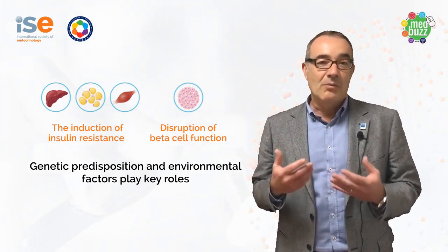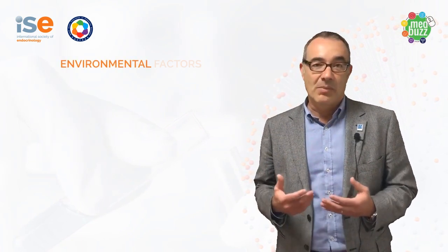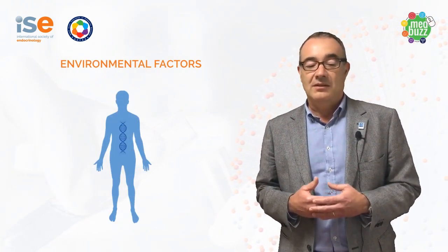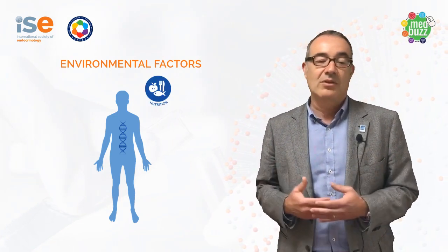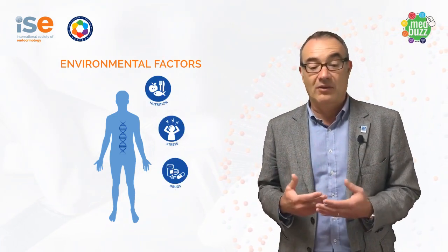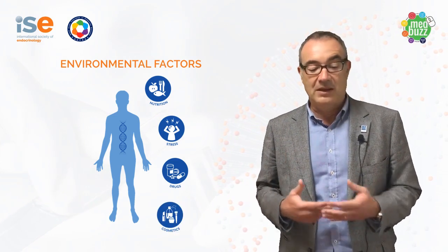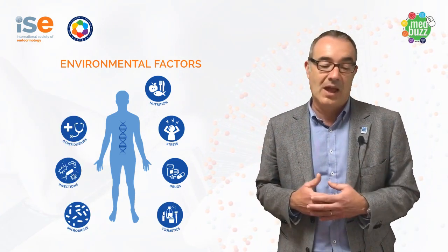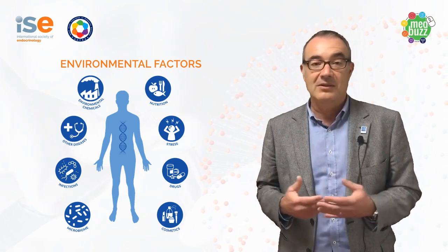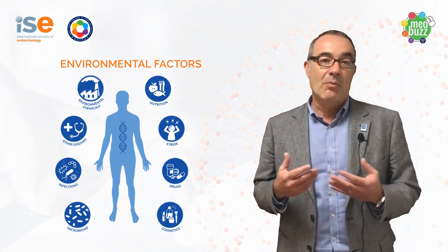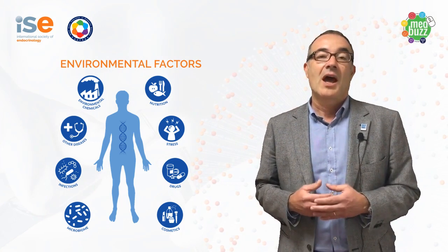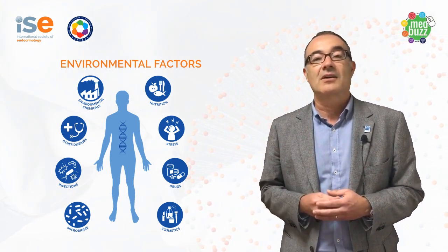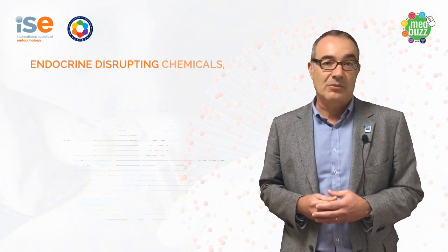Our environment is very complex. It has multiple components that are in our nutrition, stress, drugs, also in cosmetics, the microbiome, infections, other diseases that we may have, and environmental chemicals. And important components of our environment are a particular type of substances that are named endocrine disruptors.